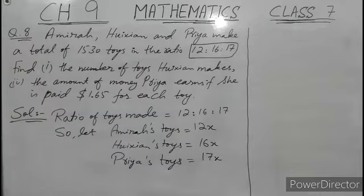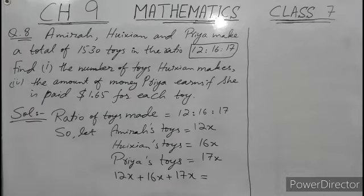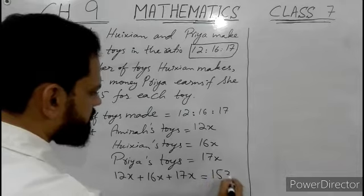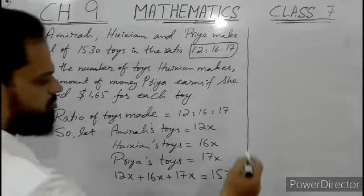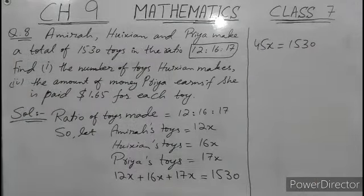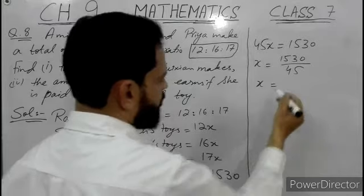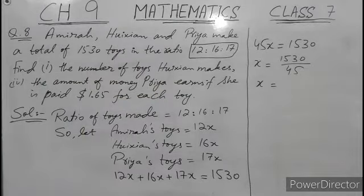We are also given that they made a total of 1530 toys. So we add: 12x plus 16x plus 17x equals 1530. This becomes 45x equals 1530. Dividing by 45 and using a calculator, we get x equals 34.